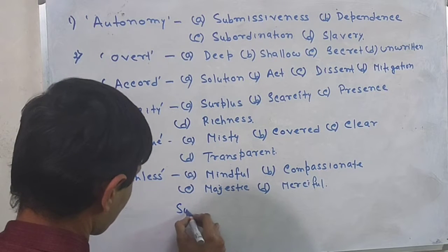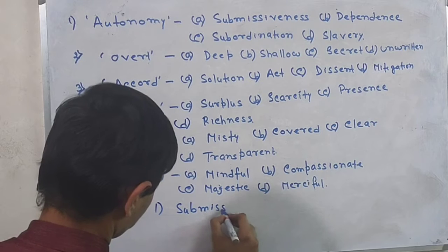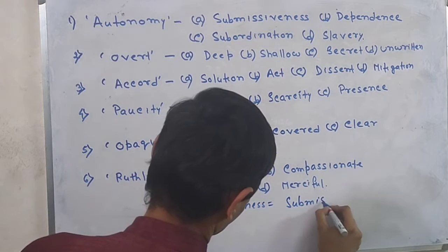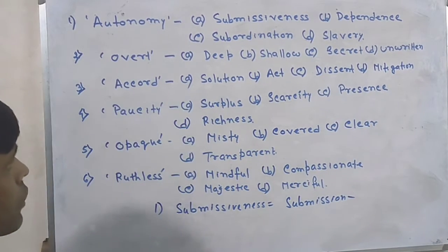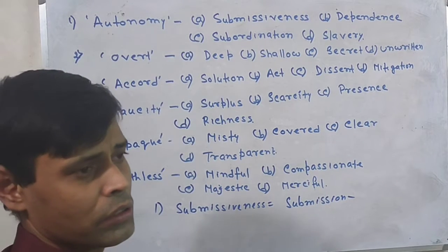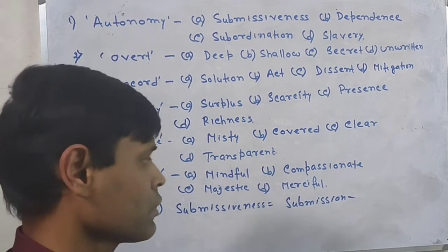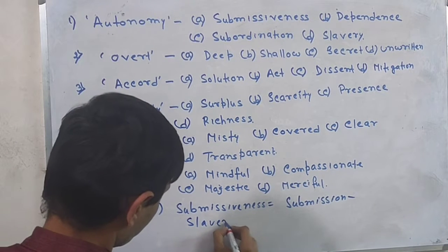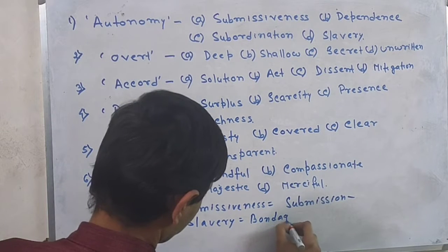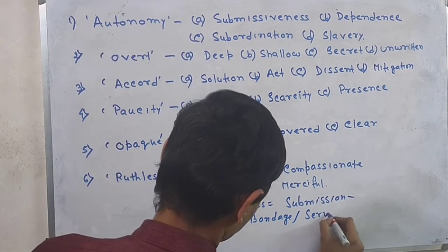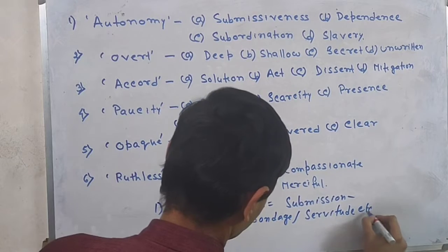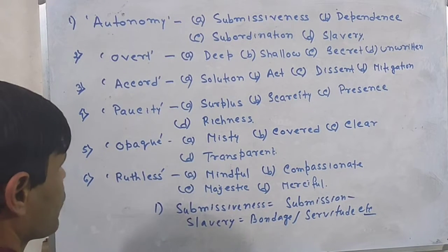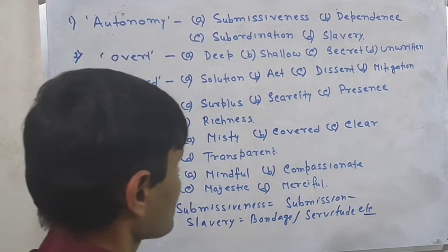If we think about submissiveness, it means submission or surrendering before someone. Subordination means working under someone — I am not the boss but still someone is over me, that is called subordination. Now if we talk about slavery, slavery means bondage, servitude, etc. So autonomy does not fit with submissiveness, neither subordination nor slavery.